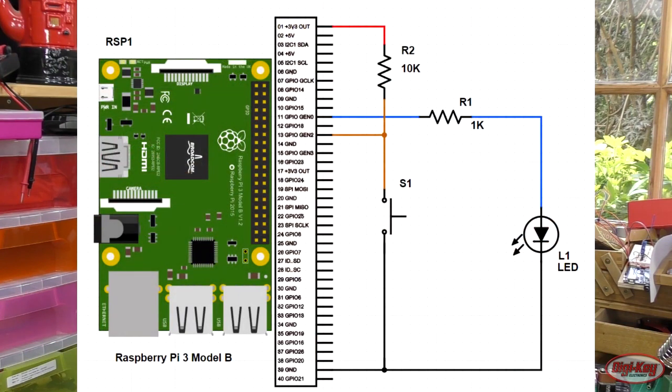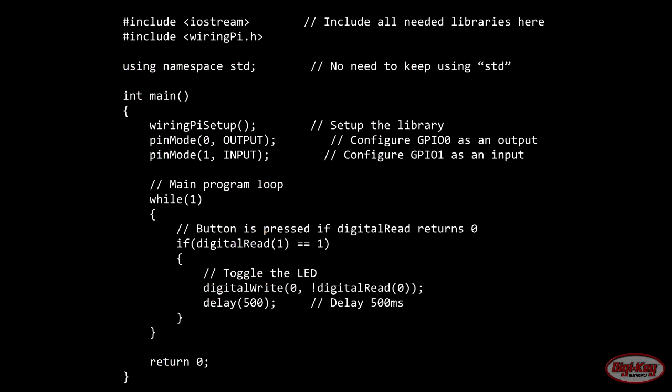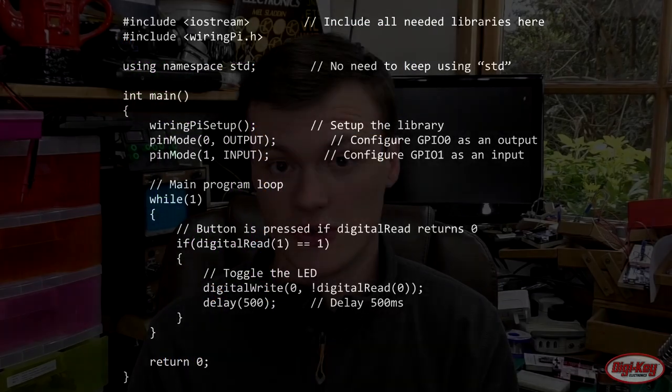Hello and welcome to Maker.io. In today's episode we're going to learn how to use the GPIO in C++ on the Raspberry Pi. The first thing you're going to need to do is to build the circuit shown on the schematic, then you'll need to enter the following code into an empty text file and save it as a .c file such as main.c.